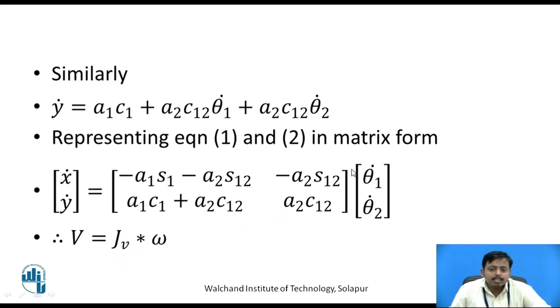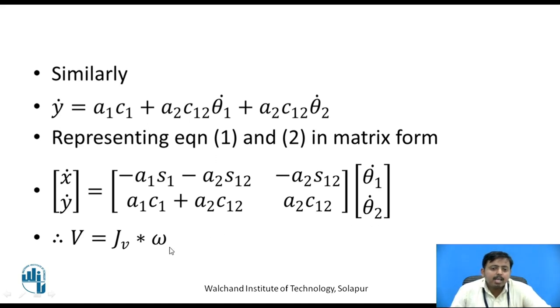The vector [theta1_dot, theta2_dot] is the matrix of angular velocities of joint 1 and joint 2, represented as omega.